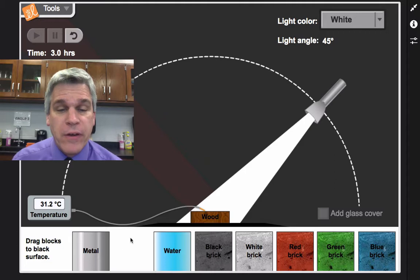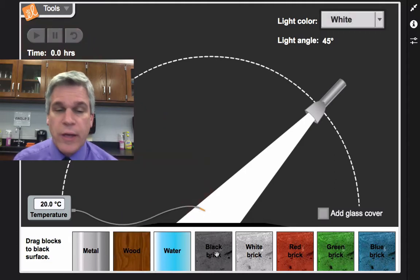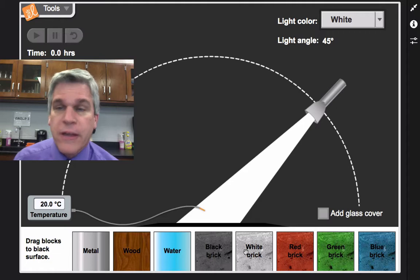And I get a temperature. Again, my independent variable are the different types of materials. So I could test the water and then the black brick and the white brick and so on.